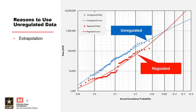Unregulated datasets should be developed when regulation effects are significant. Regulation can change over time, so the data needs to be homogeneous — we should not combine records of regulated data with records of unregulated data. And as always, engineering judgment will be required.